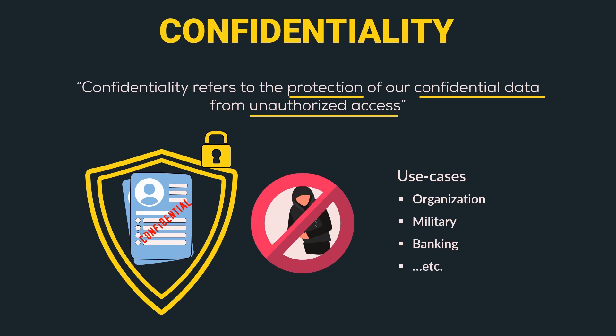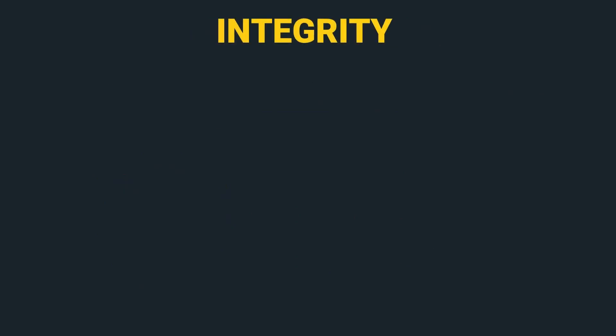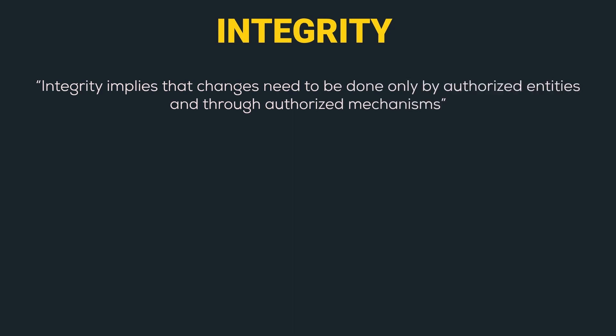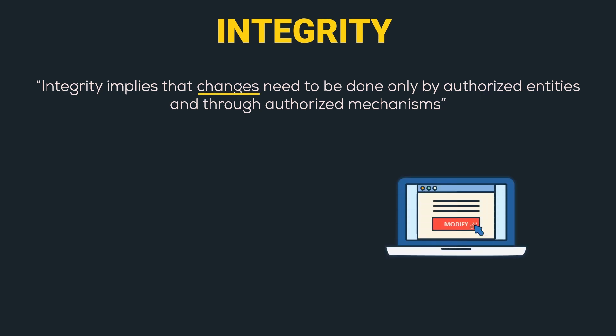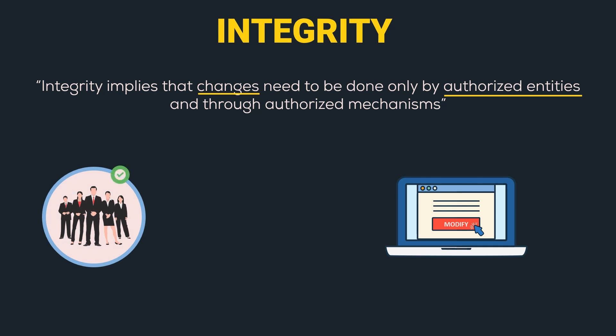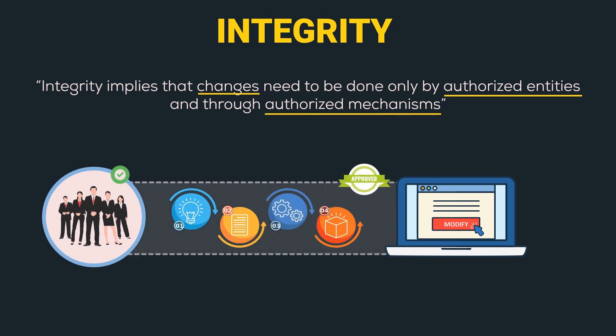Now let's go to the second security goal — integrity. Integrity implies that changes need to be done only by authorized entities and through authorized mechanisms. Authorized entities are a group of individuals that have the authority to change the data. Examples of authorized entities can be CXOs of a company, senior management team, senior developer team, etc.